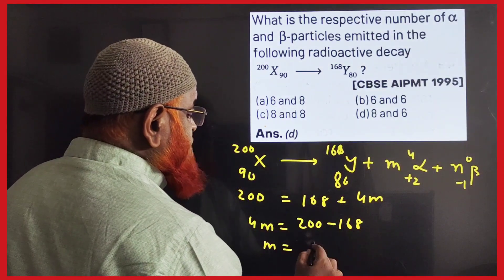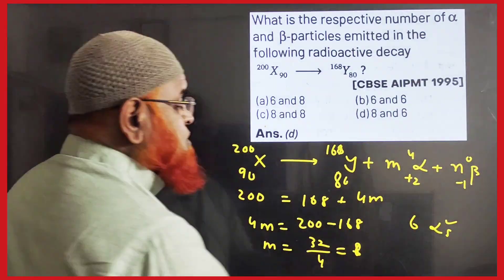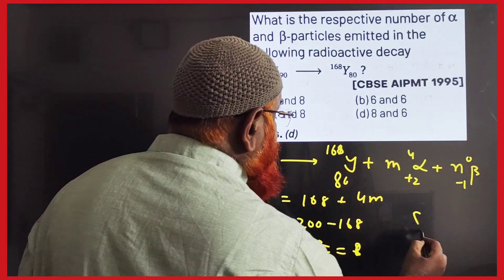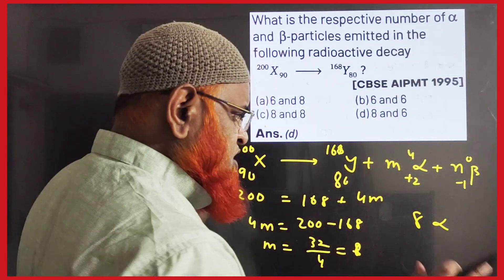Therefore M is nothing but 32 divided by 4, so that's 8. So how many? 8 alphas have been ejected out. 8 alphas are ejected, so you got the value of M.